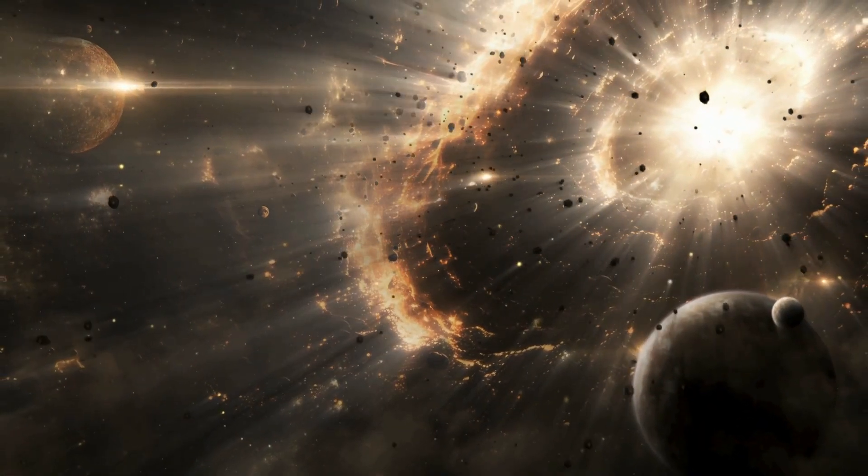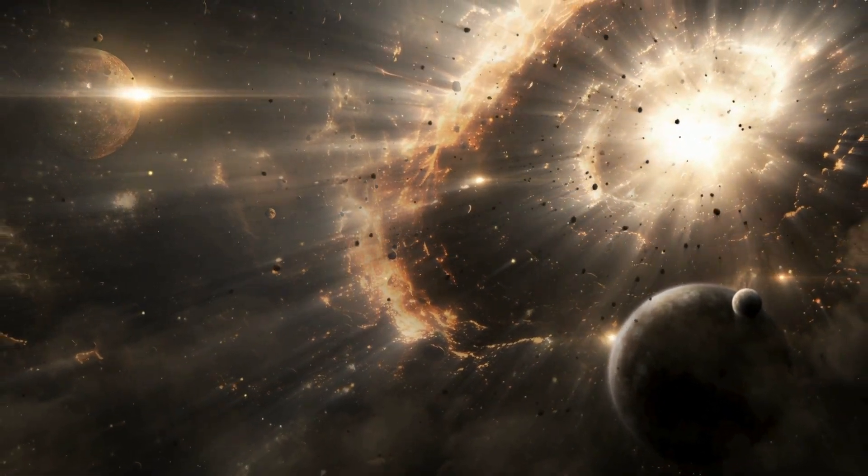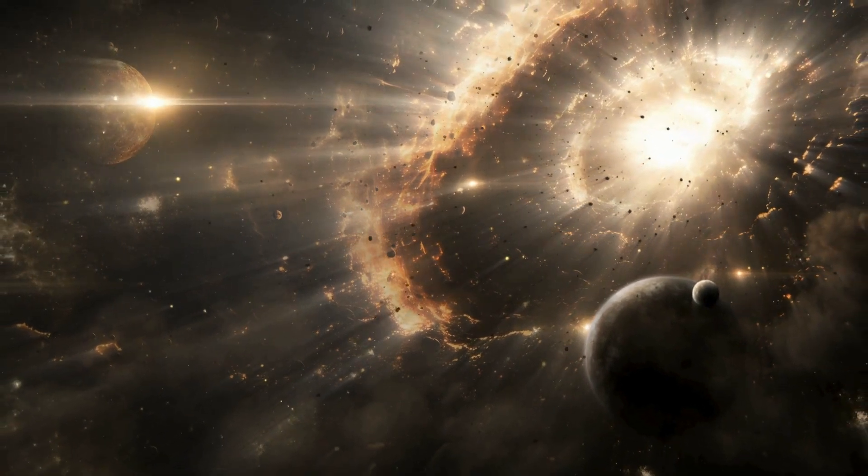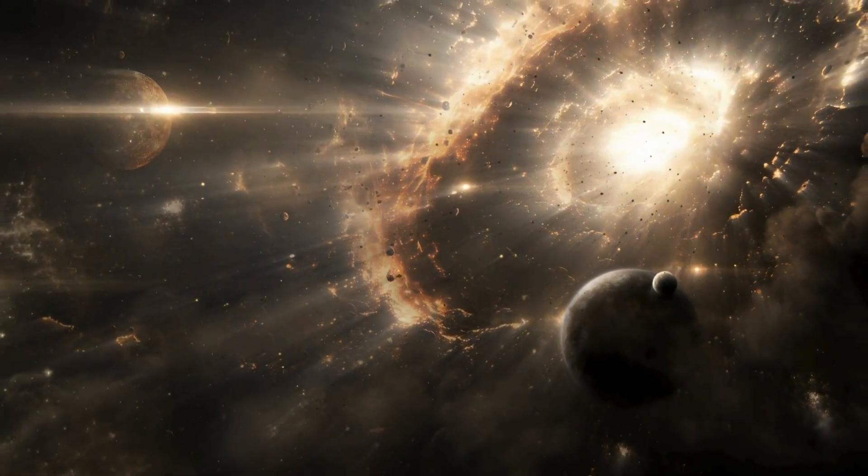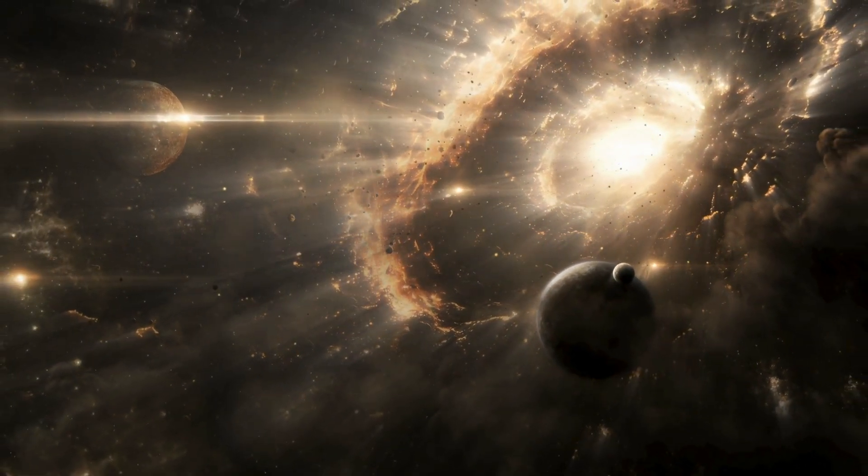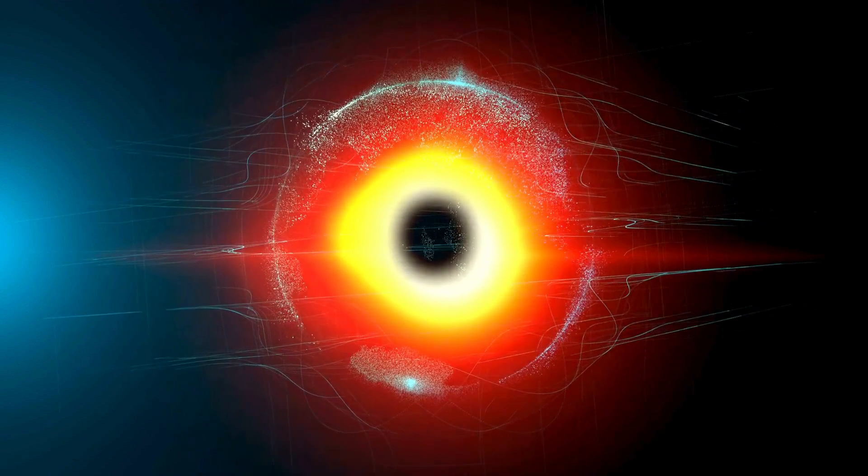Surprisingly, if you replace the sun with a black hole of the same mass, gravity wouldn't change. The planets would keep orbiting just like before, though the solar system would get a whole lot darker and colder.